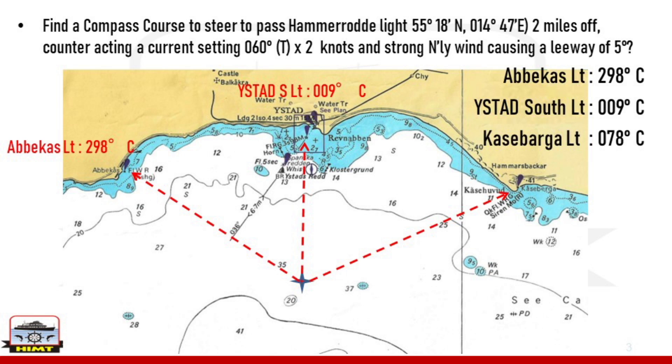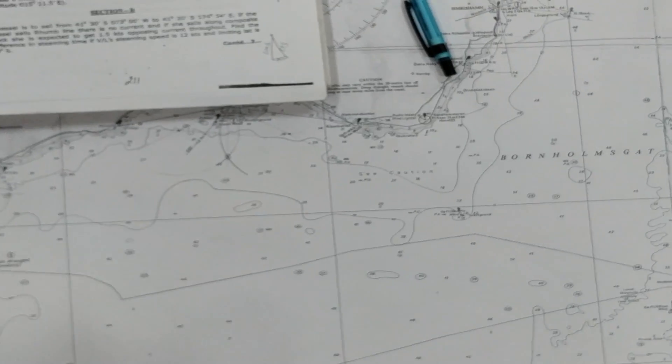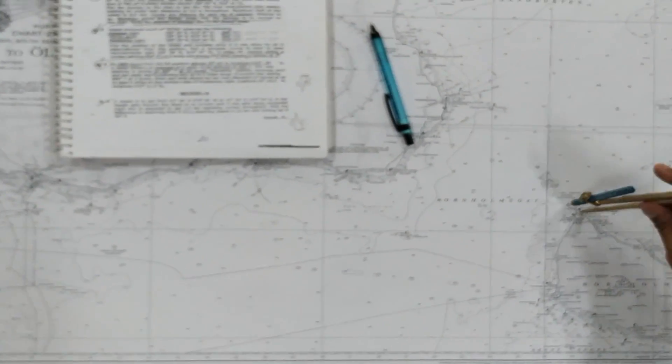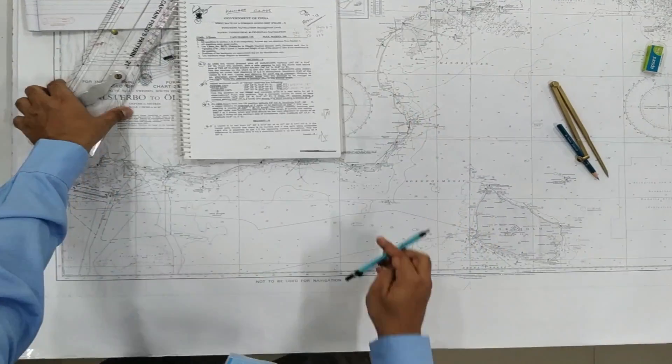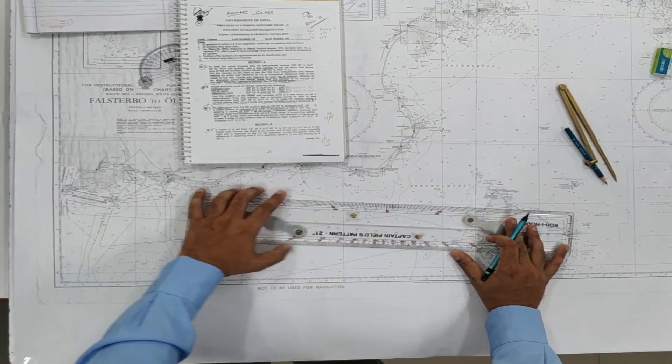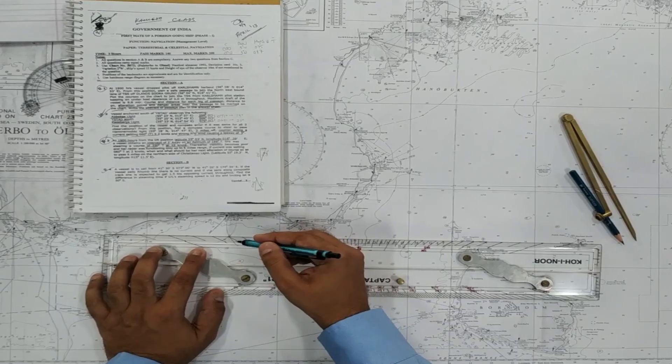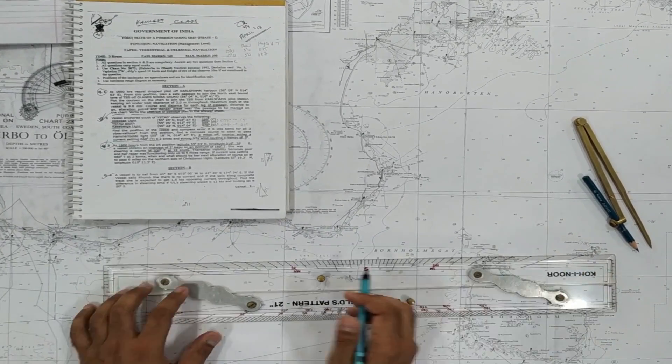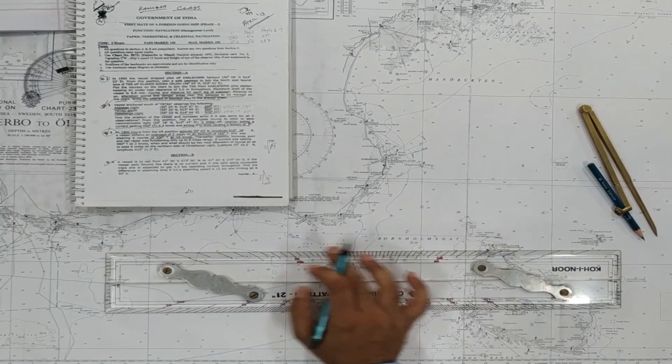So we have to pass 2 miles off. So the first thing what we do is we take 2 miles off from the divider's scale, keep it on Hammerrod light. Next step is to from your position, from your fix to Hammerrod light, draw a line as a tangent. This line from your fix to passing 2 miles off Hammerrod light will be your course made good, because ultimately we have to pass 2 miles off.